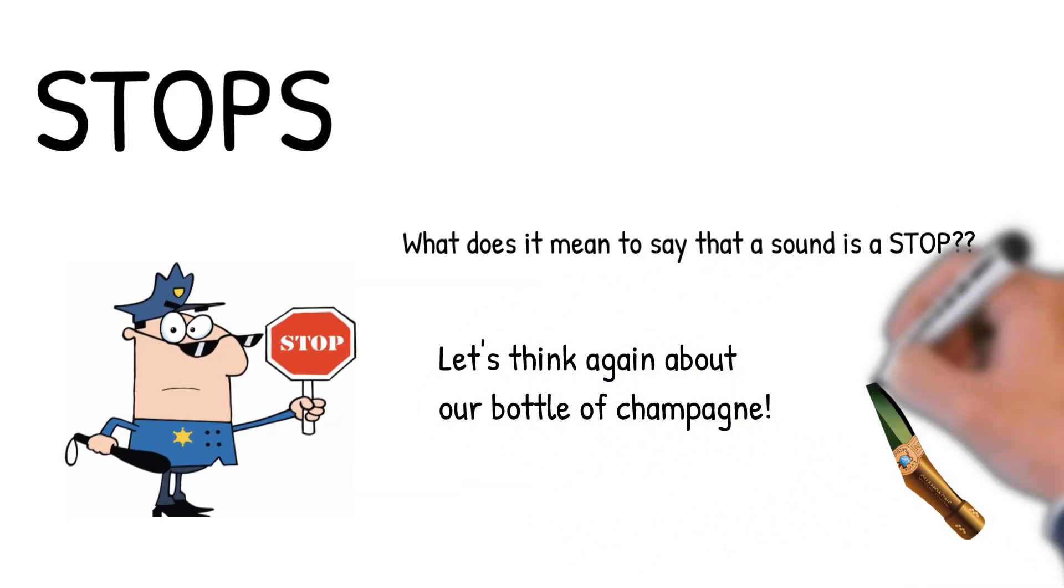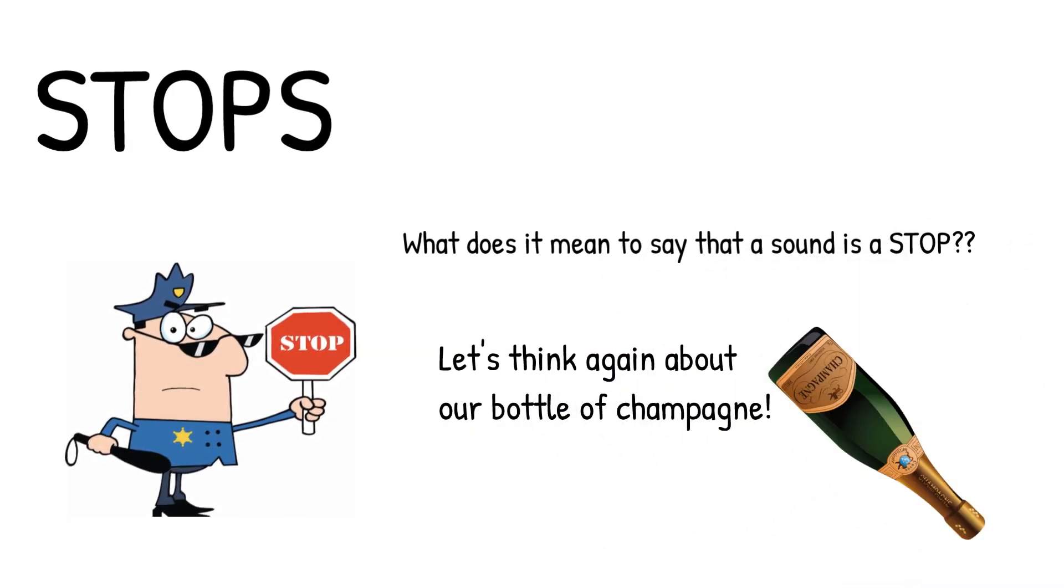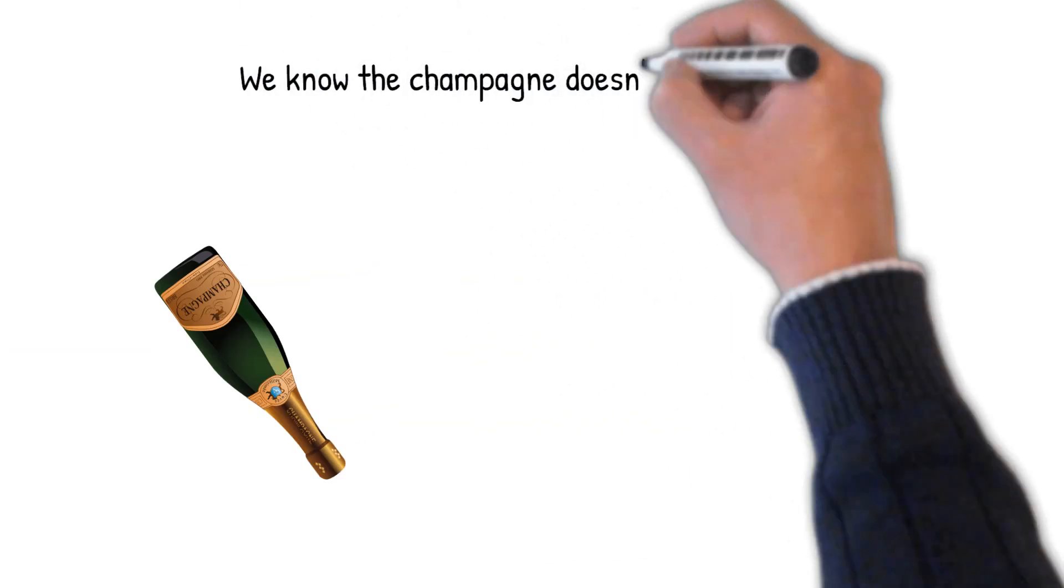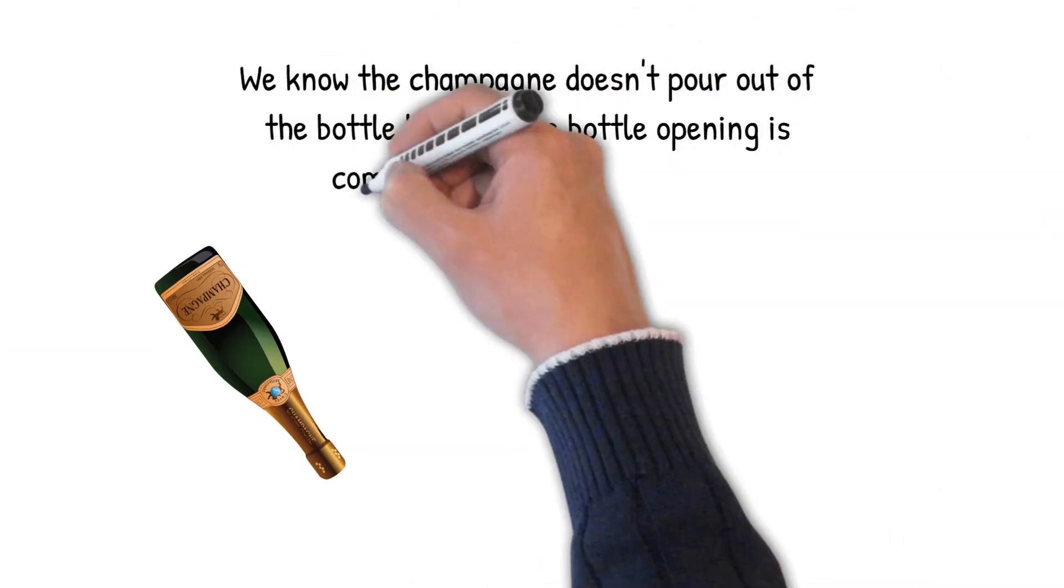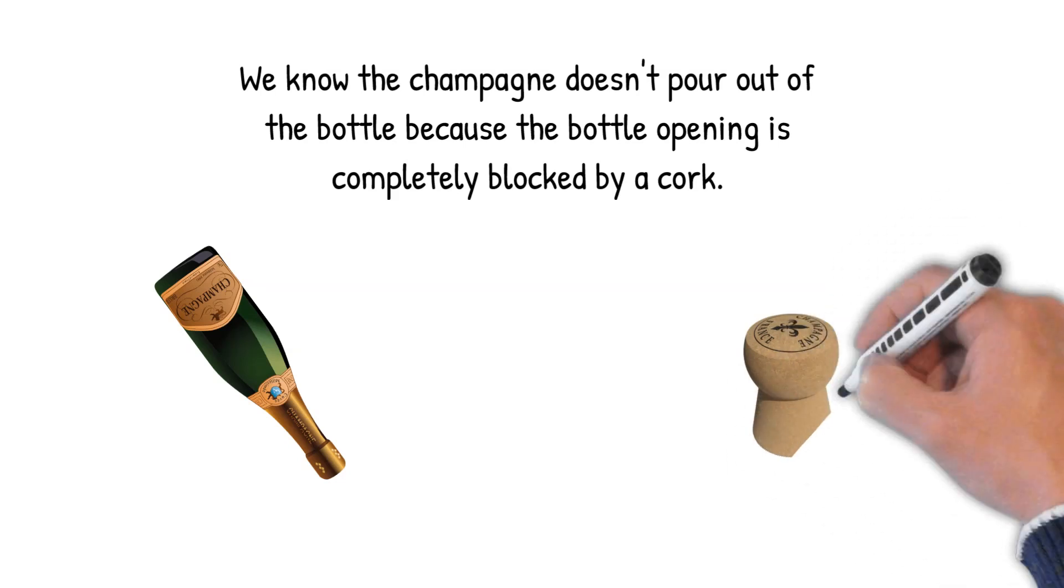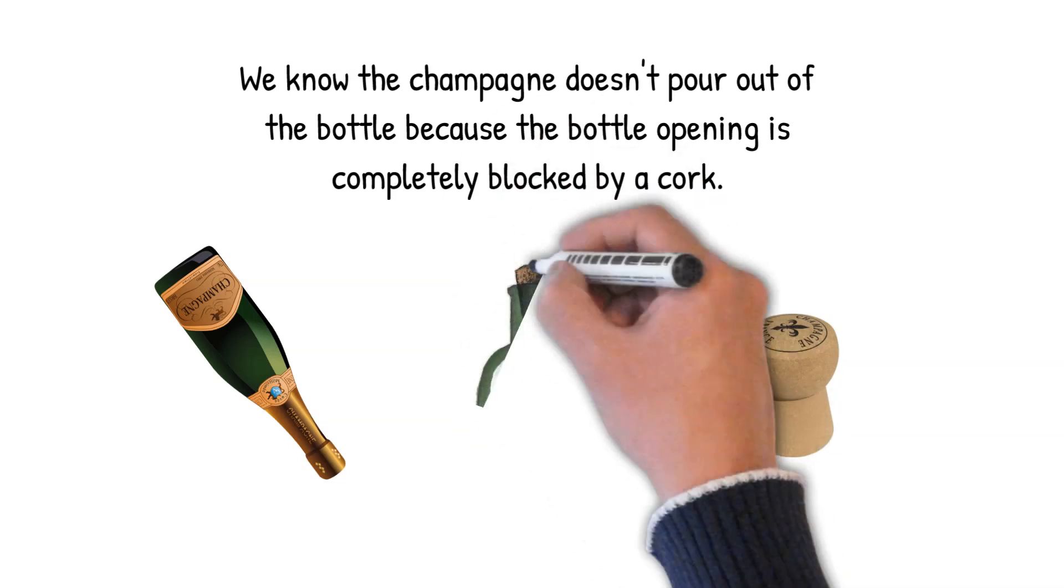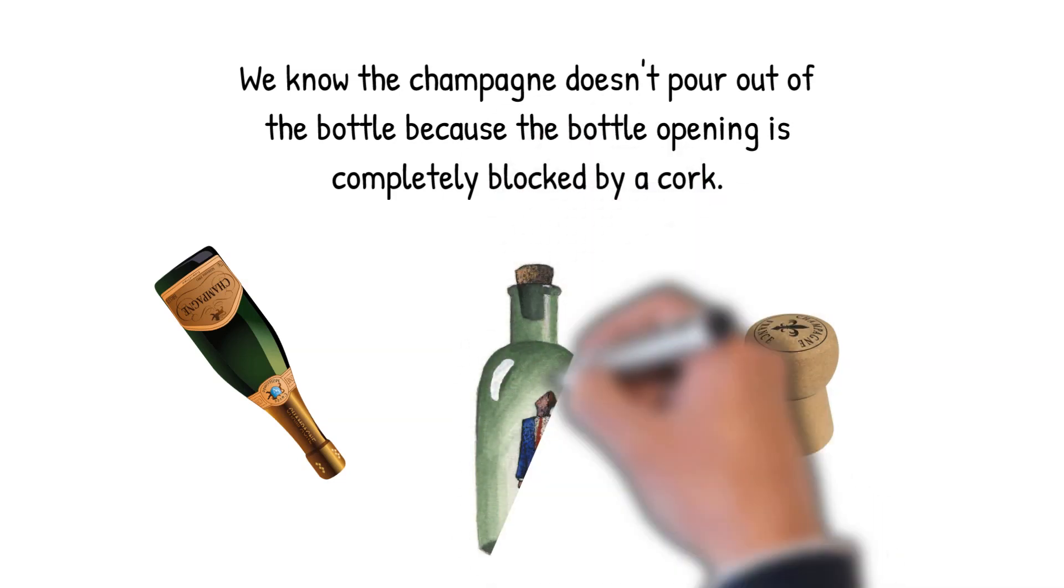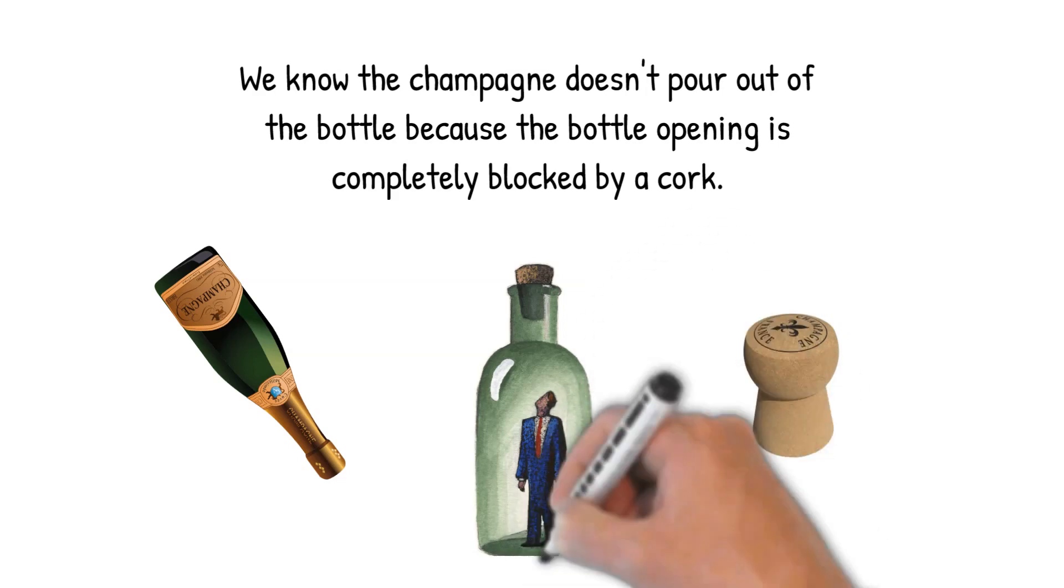Well, let's revisit our little bottle of champagne. We know that even if we pour the bottle upside down, champagne can't pour out. That's because there's a cork completely blocking the bottle opening. What's most important for our purposes here is that the cork blocks the opening of the bottle and completely prevents the flow of champagne from the bottle out into the world.